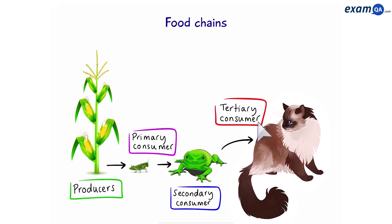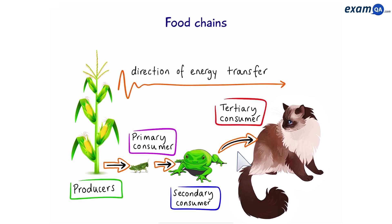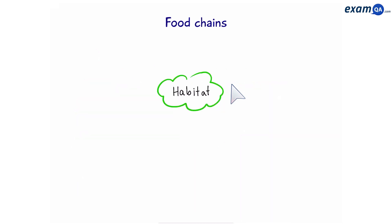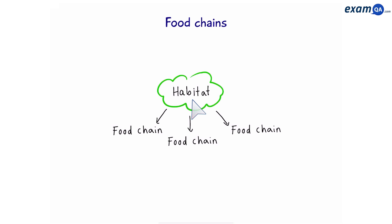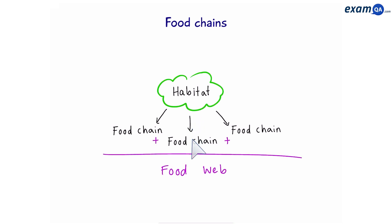So you see, the cat eventually got the energy from the sunlight, and what we have here is a food chain. The arrows in the food chain show us the direction of energy transfer — or in other words, it's showing us who is eating who. Now, in a habitat we can have many different food chains. If we join them together, that creates a food web.